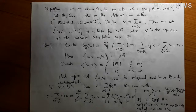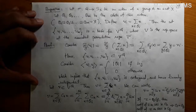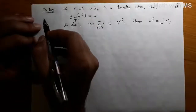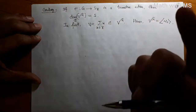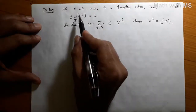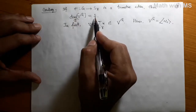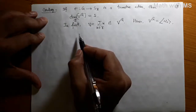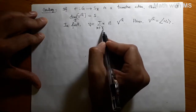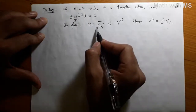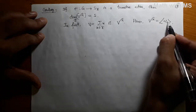In particular, if your action is transitive — that is the group has one orbit — then the dimension of the fixed space is just one. A non-zero vector which is fixed by the permutation representation is V0 equals the sum of X as X is in X. It is clearly fixed, and hence the fixed subspace is precisely the vector subspace spanned by V0.